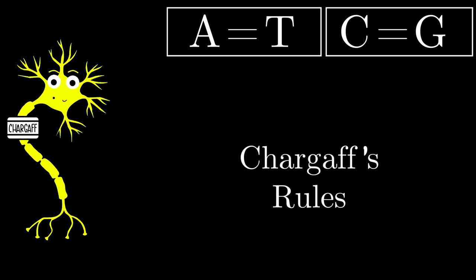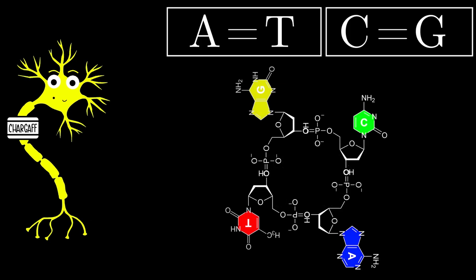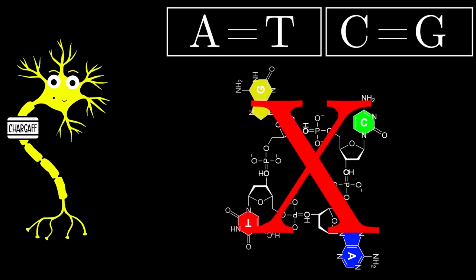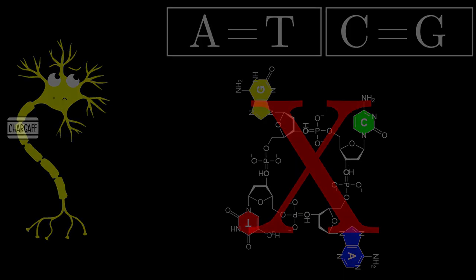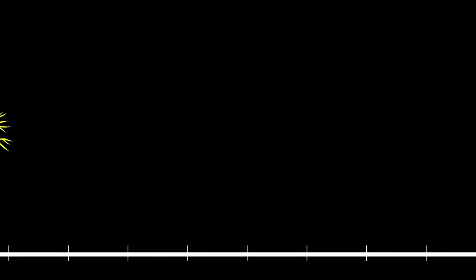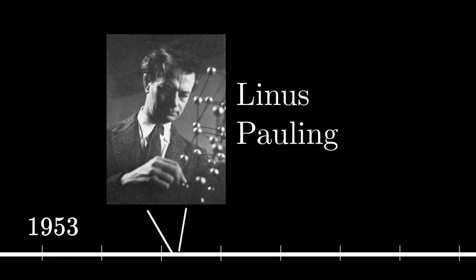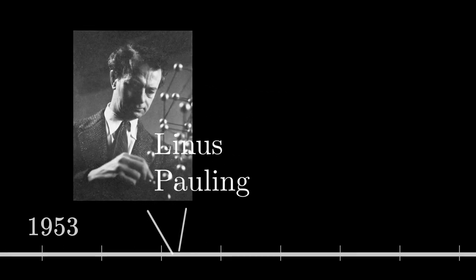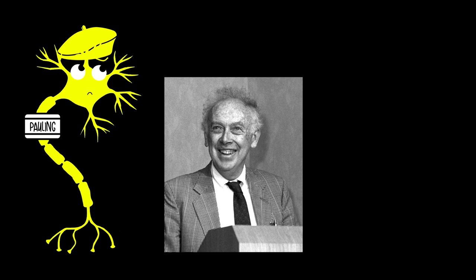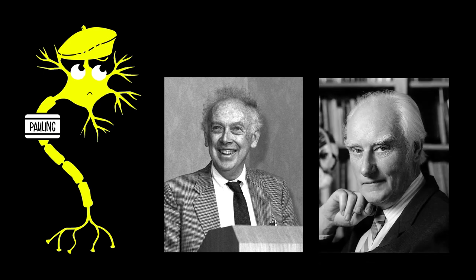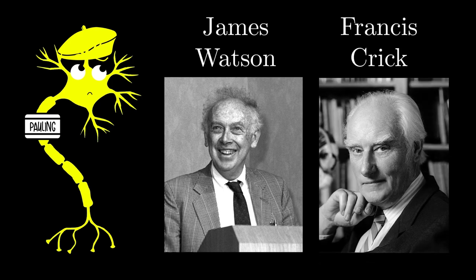So great, Chargaff's rules showed that the tetranucleotide hypothesis was wrong. But then, what's right? How do these nucleotides actually combine to form large DNA molecules? Linus Pauling, whom we mentioned in our last video, took a stab at this. Remember, this guy was kind of famously smart. So tons of people were excitedly waiting to see what Pauling came up with. And among those waiting were two young men, a 25-year-old ornithologist, bird expert, and a 35-year-old physicist.